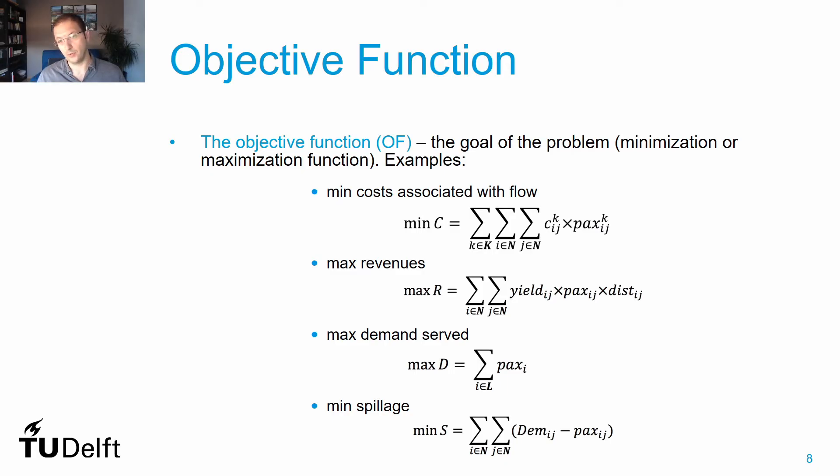I propose four different objective functions. First, minimizing costs associated with flow, like in our reference problem. It can also be maximizing revenues with passengers multiplied by yield and distance. Or maximizing the number of passengers served - summing all passengers flying with me. Or minimizing spillage - the minimum difference between capacity and demand.